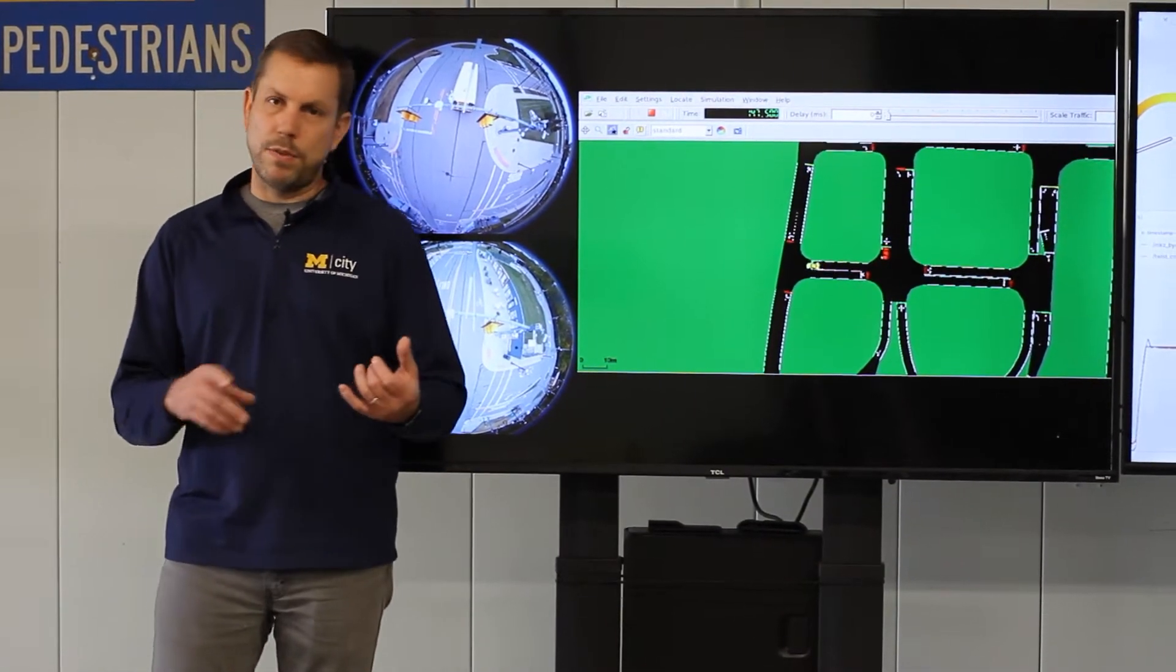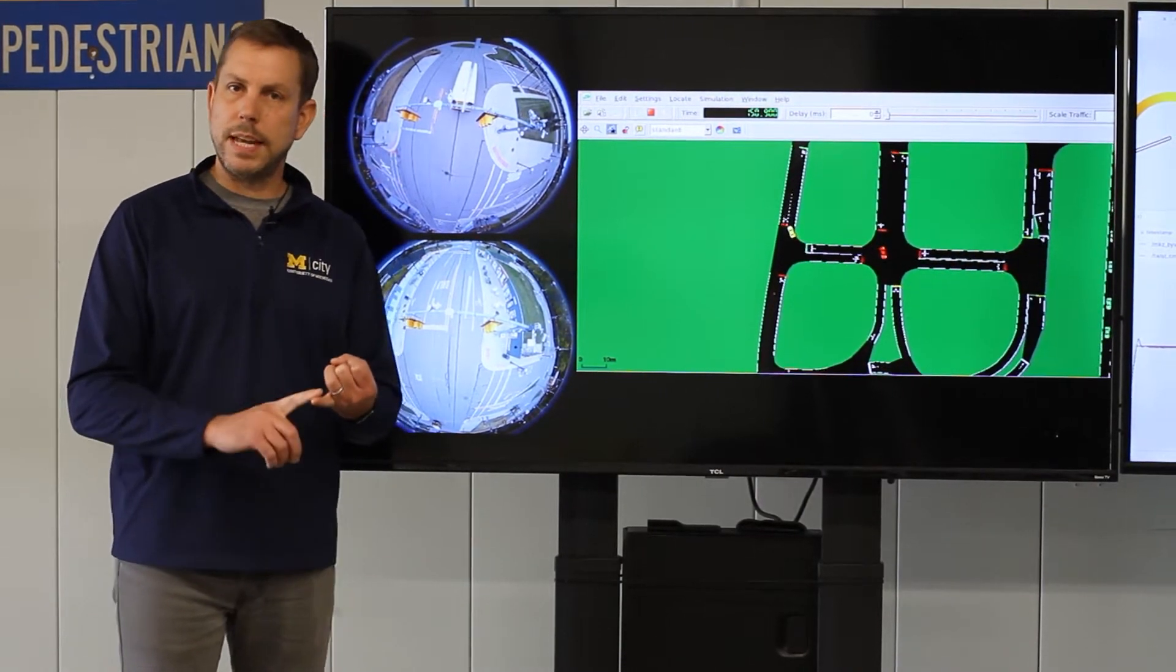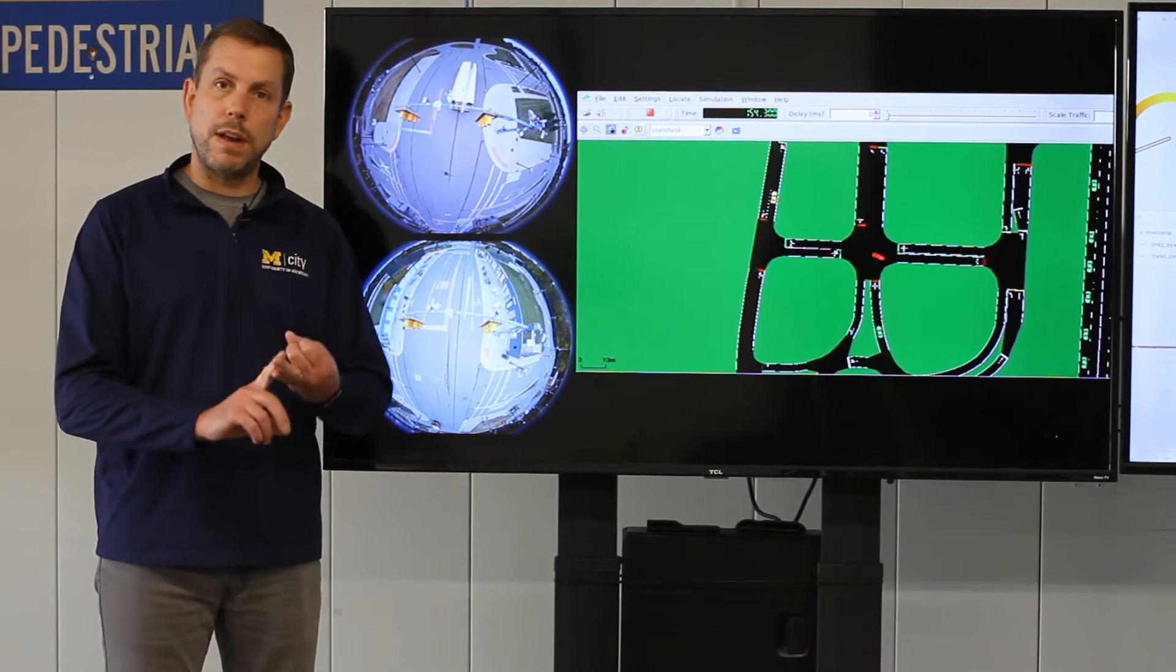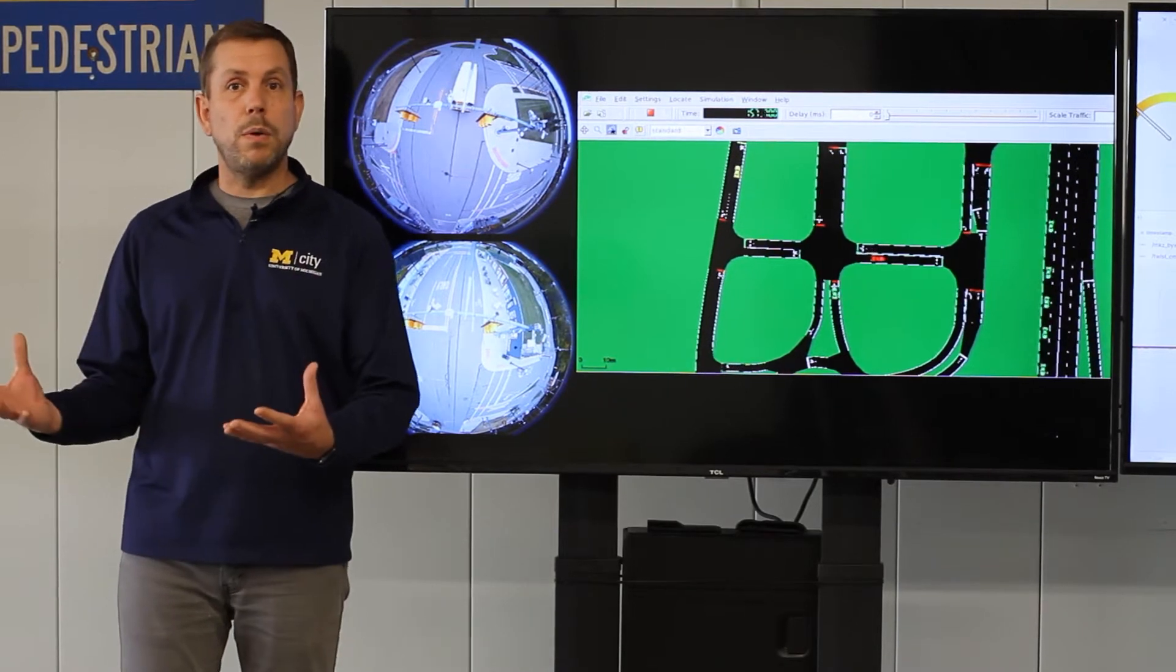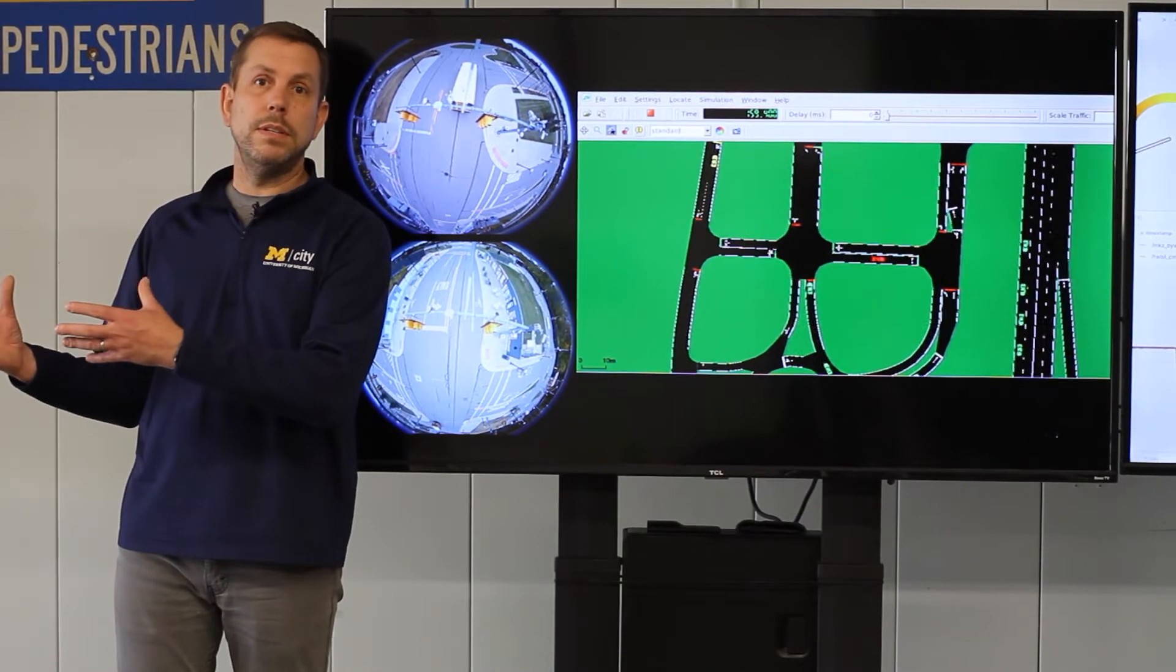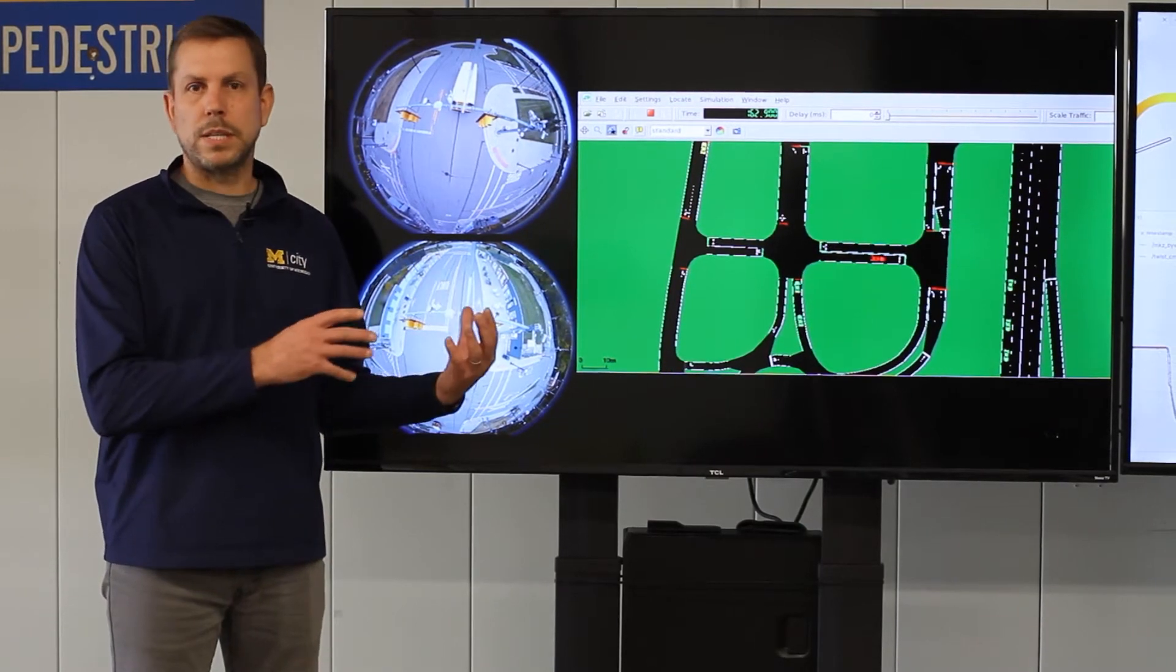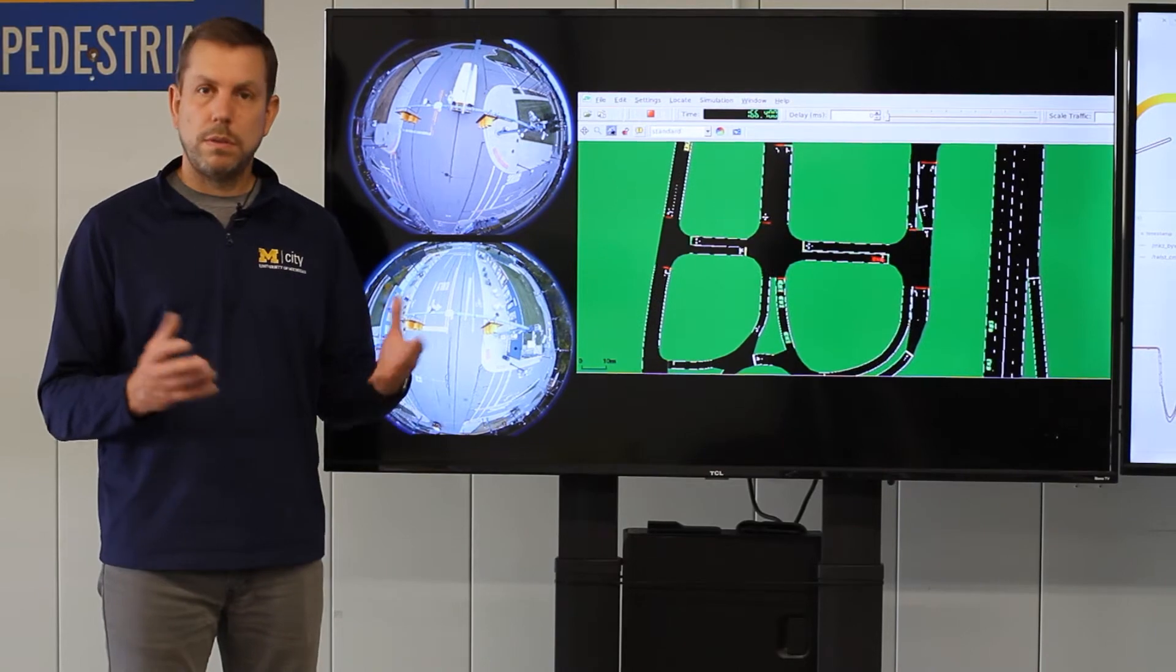If I as a researcher have gone through the training process collecting data with the Mobility Data Center and tested and iterated on my algorithms in our naturalistic driving environment simulation, I've used mCity OS to create test scenarios. Now I'm ready to validate those and check them out on a real physical vehicle on real roads. How do I do that?